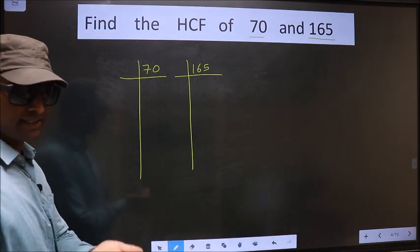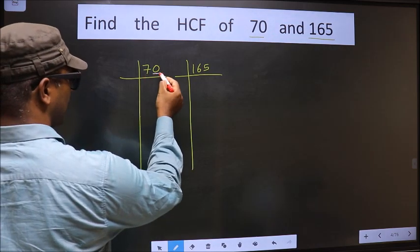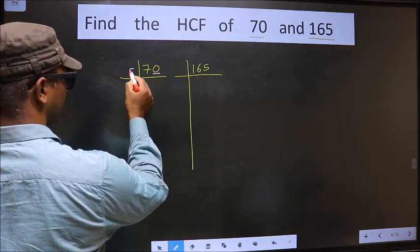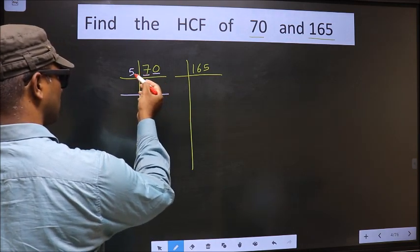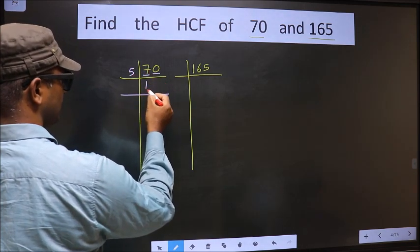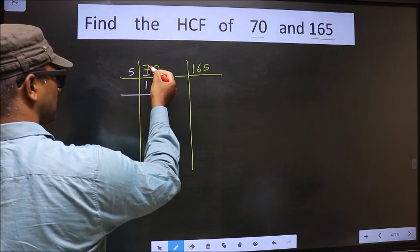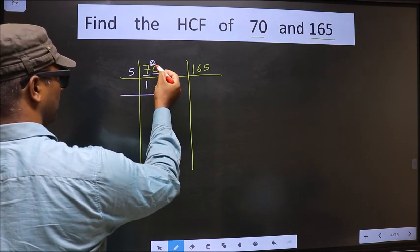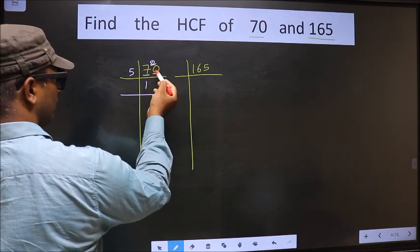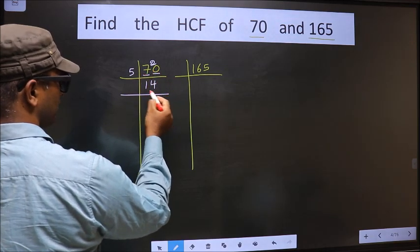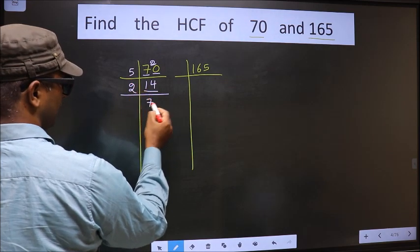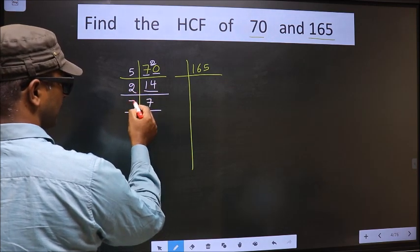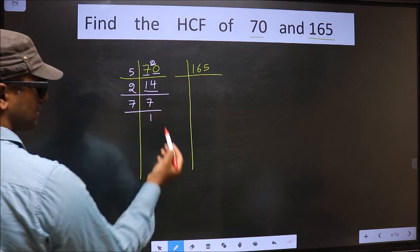For this number, the last digit is 0, so we take 5. The first number is 7. A number close to 7 in the 5 table is 5 once 5. 7 minus 5 is 2, carried forward making 20. When do we get 20 in the 5 table? 5 fours 20. Now we have 14. 14 is 2 times 7. Now we have 7. 7 is a prime number, so 7 once 7.